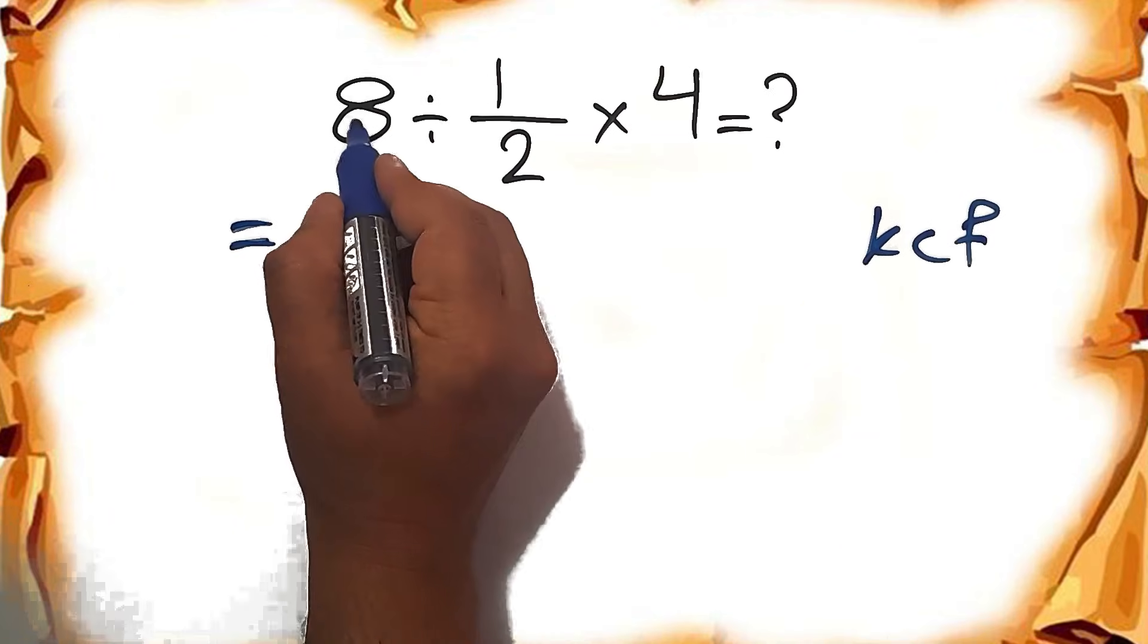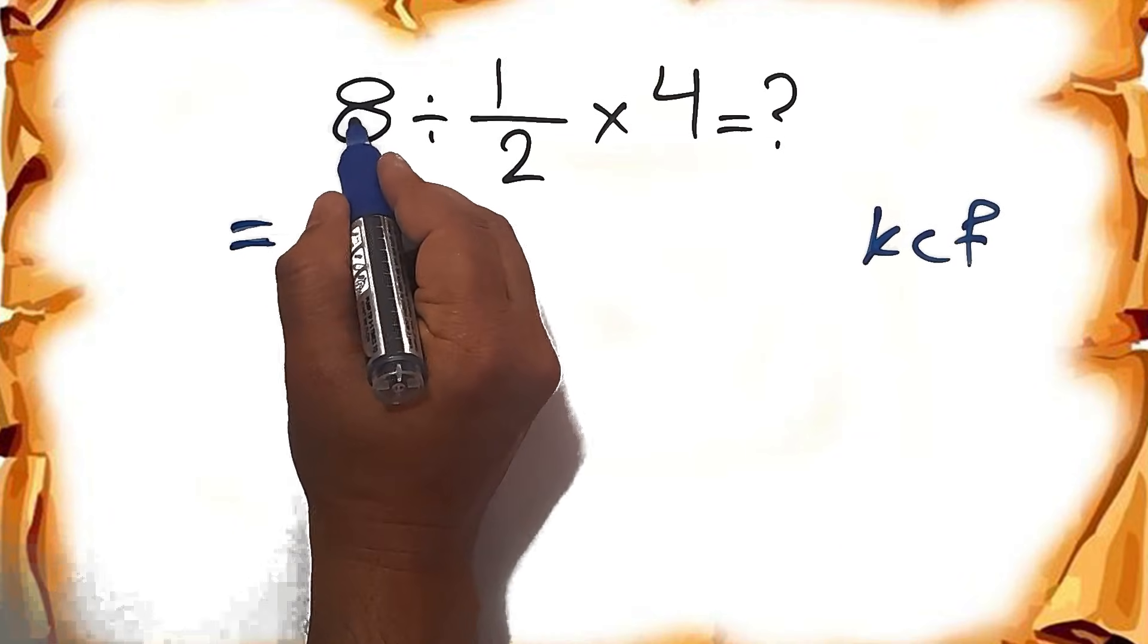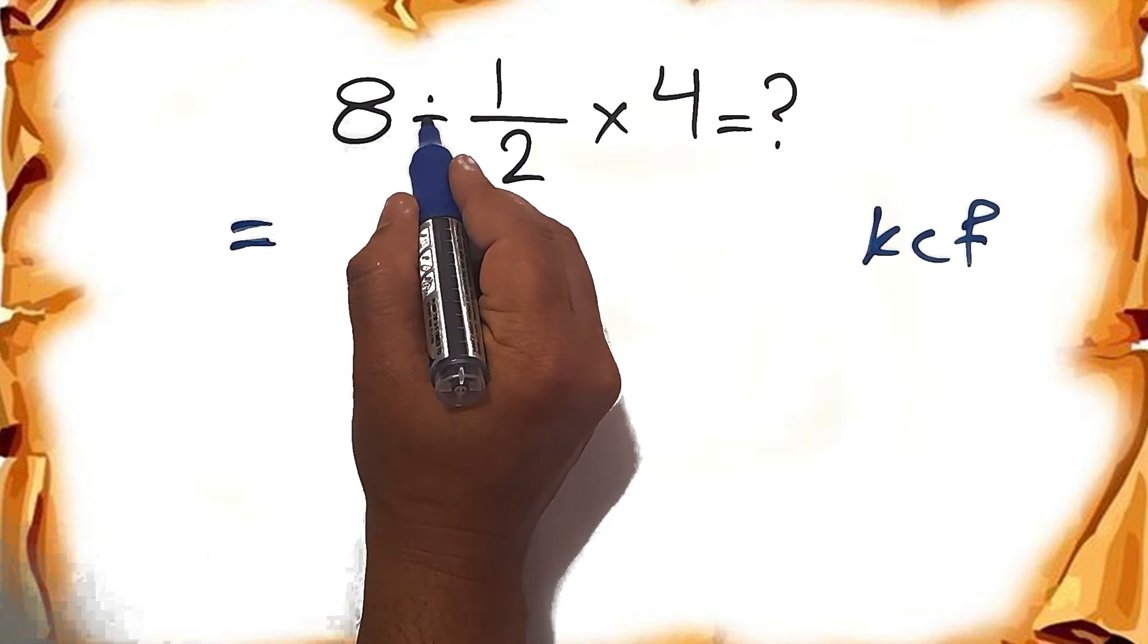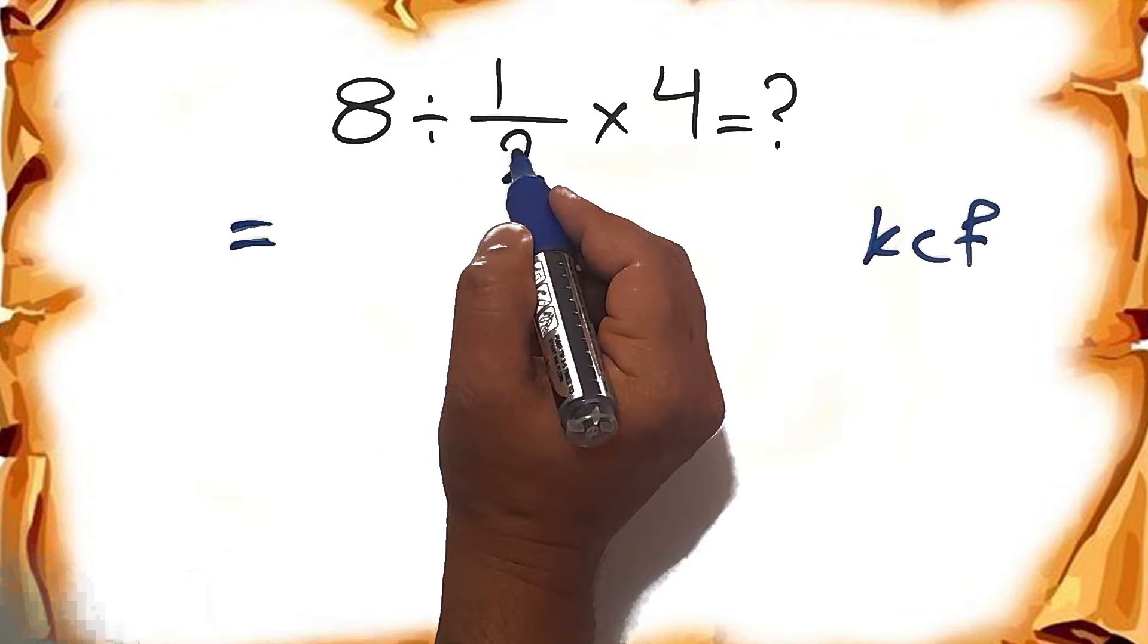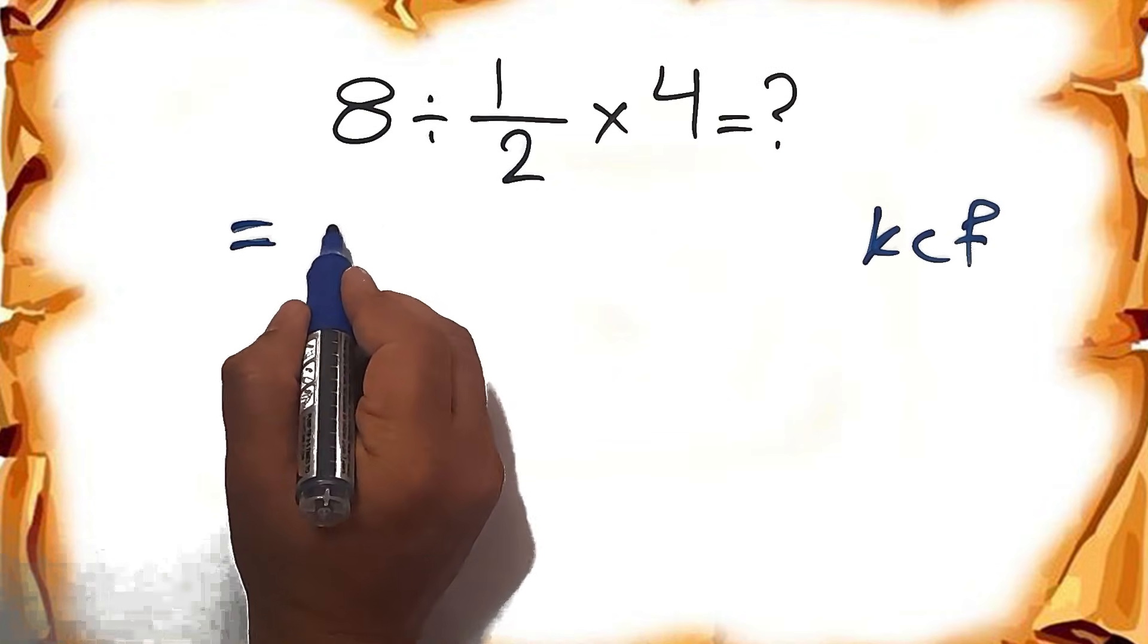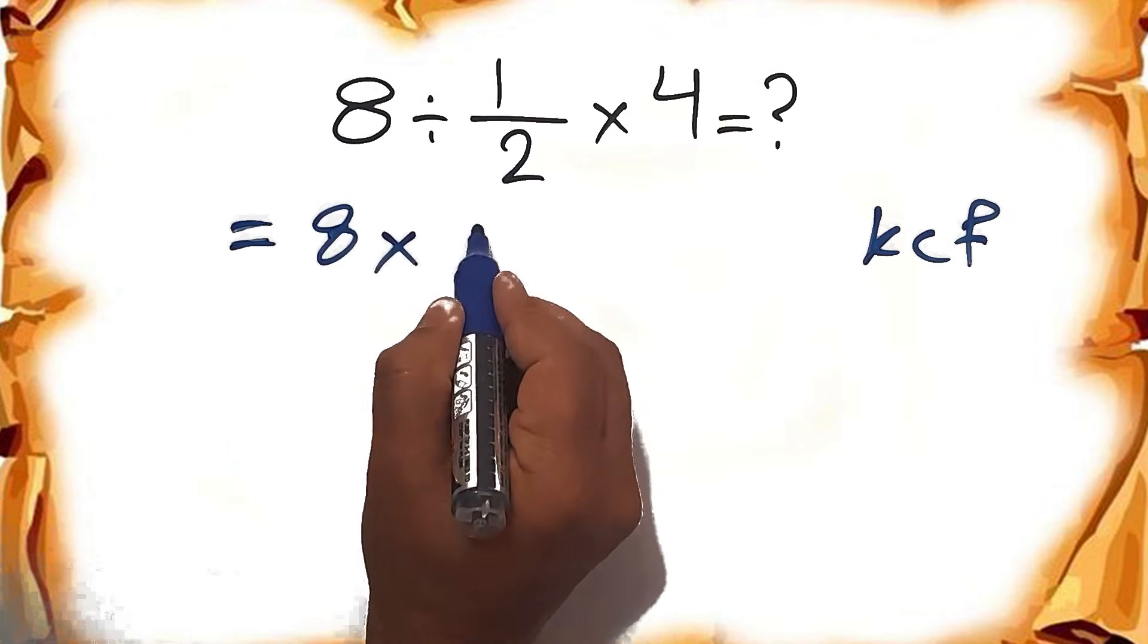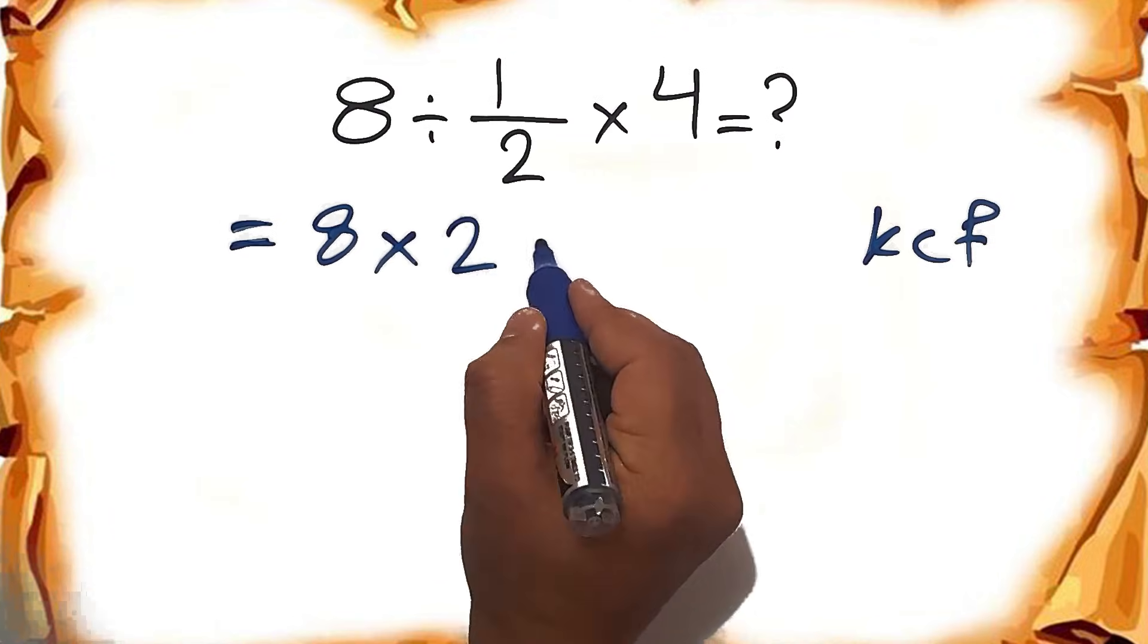Keep the first fraction, divide, change division to multiplication and flip the second fraction. So we can write 8 times 2 then times 4.